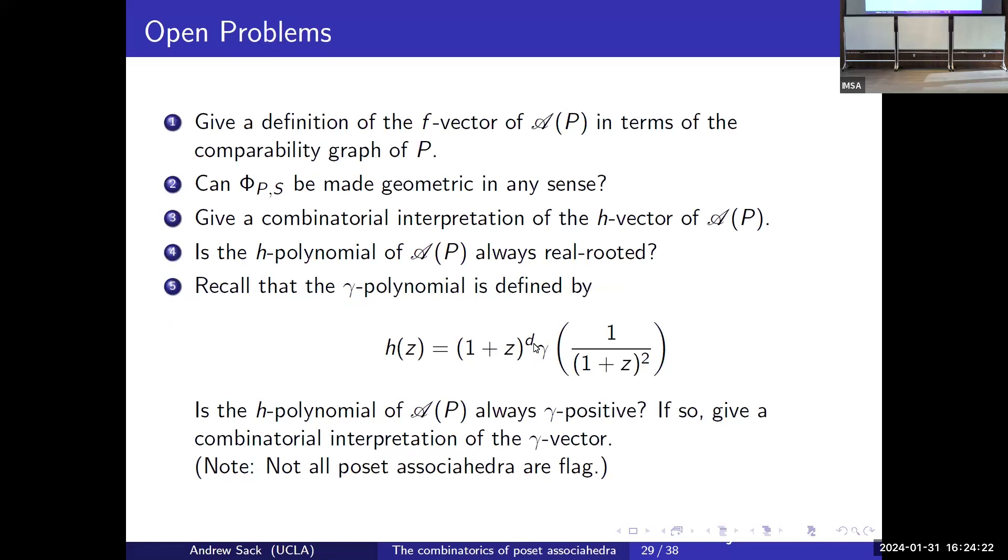I'll talk a little bit about some open problems. The first one is this bijection is very nice, it's a direct combinatorial argument, but at the same time it's kind of unsatisfying because while it tells us that poset associahedra F-vectors are comparability invariants, it really feels like the F-vector should have a definition in terms of the comparability graph itself to make it really explicit. Similar things, for example, happen for the order polytope. If you're familiar with the order polytope, the chain polytope does what we would want here.